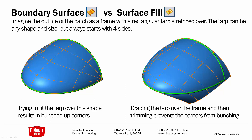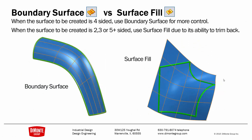However, if we've taken our tarp and instead of trying to scrunch it in the frame, if we just draped it over the top and then trimmed it to fit this profile, we see we have a much better flow in these orange lines, and we don't have that degenerate point in the corner. So when the surface to be created is four-sided, boundary surface offers more control. We see in the example on the left that the flow of the surface follows the perimeter of the surface. Whereas when the surface is two-, three-, or five-sided, we use surface fill because it creates a larger patch and trims it back. Note that the flow of the surface is not dictated by the boundary in surface fill, whereas the flow of the surface is dictated in a boundary surface.